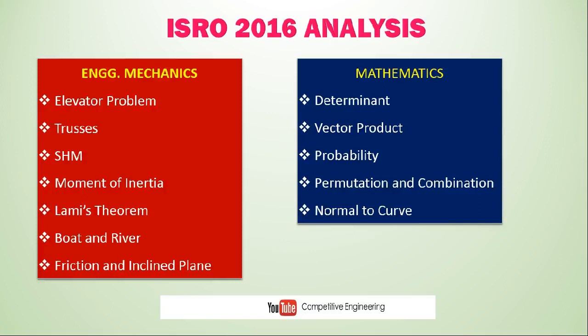Engineering Mechanics is very important — every topic was asked last year. Topics included elevator problems (apparent weight and acceleration when moving up and down), trusses, simple harmonic motion, moment of inertia of a given diagram, Lami's theorem for force analysis, boat and river problems (upstream/downstream motion), and friction on inclined planes — including one body sliding over another. From these seven areas, 12 questions were asked.